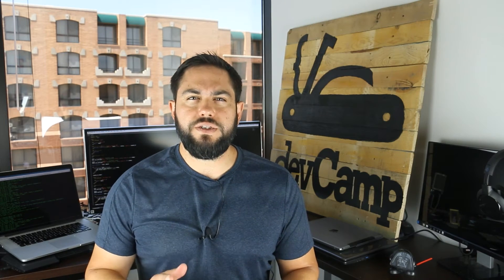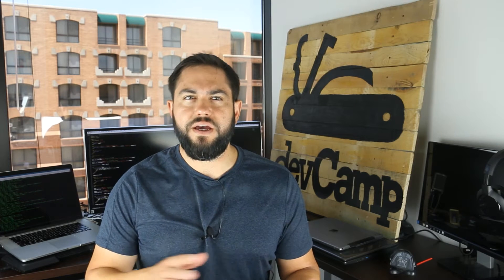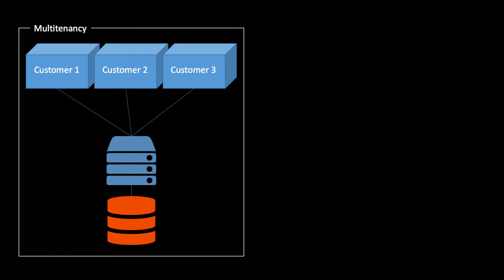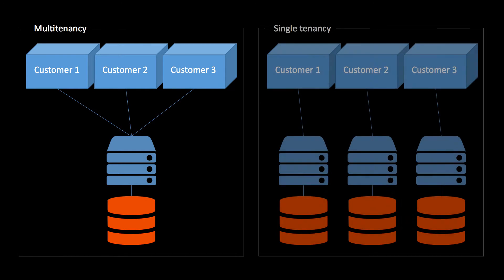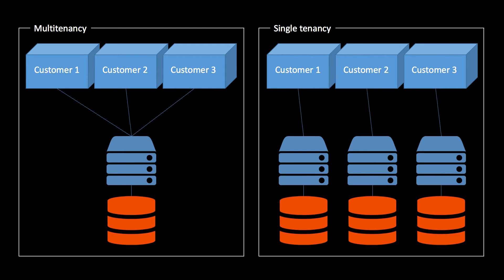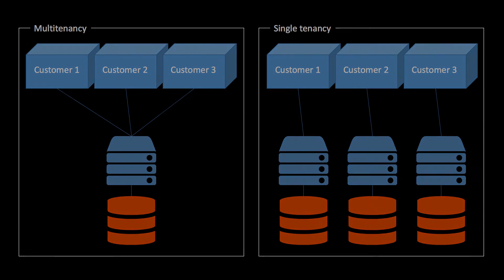If you've never used enterprise software before, this concept may seem kind of like a no-brainer. However, it's common for businesses to utilize a single-tenant approach. As you may guess, single-tenancy is where an application has a single customer. The easiest way to understand the difference between multi-tenancy and single-tenancy is by looking at a diagram of both options. Applications that leverage multi-tenancy allow multiple customers to access the same application server and database. This is in contrast to single-tenancy applications, which are structured so every customer gets their own server and database. Most of the time, these servers and databases are hosted by the customers themselves, which gives the customer complete control over the entire system.